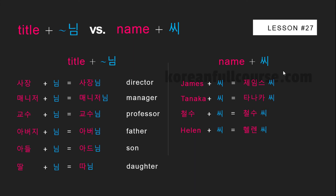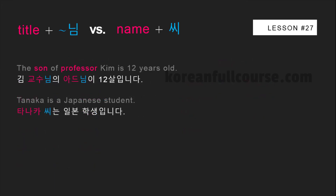The 씨 particle is used only with names. In Korea, calling people by their name is considered rude. Only some categories of people can call you by your name. For example, if you're a university student, your professor can call you by your name or use the honorific particle 씨 to show some respect — James 씨, Tanaka 씨, 철수 씨, Helen 씨. Don't use this particle when talking to people who are quite older than you — it will be rude. Instead, use their job titles. As for showing respect to children: 'Son of Professor Kim is 12 years old' — 김 교수님의 아드님이 12살입니다. Even though the kid is just 12, we use 님 when talking to the professor to show respect to him by honoring his family members.